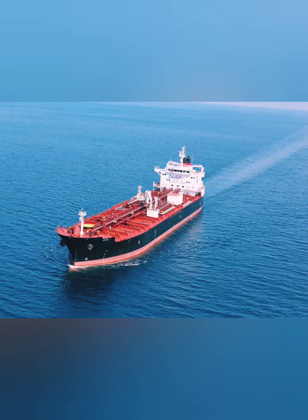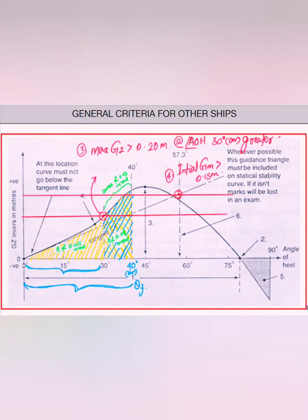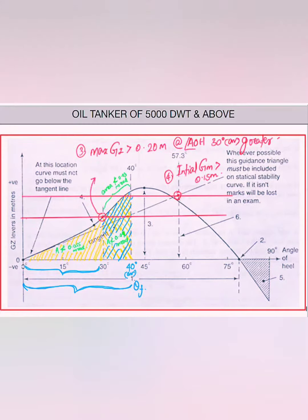I will now be discussing the stability criteria for 5 different ships to easily memorize the whole concept. You can download this comparison sheet with the text from the link given in the description. First I will be discussing the stability criteria for oil tankers, passenger ships, and other cargo ships. These 3 ships share the same stability criteria except for some additions for passenger ships.